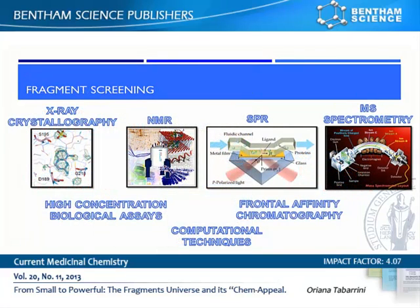Fragment hits interact weakly with the target, so the detection of a binding event is strictly related to the sensitivity of the used assay. A number of biophysical techniques originally developed to address other issues have been turned into screening tools. X-ray crystallography, SPR, NMR, and mass spectroscopy or chromatography are the screening approaches most commonly used when dealing with fragments. They are reviewed in our article together with their recent applications.